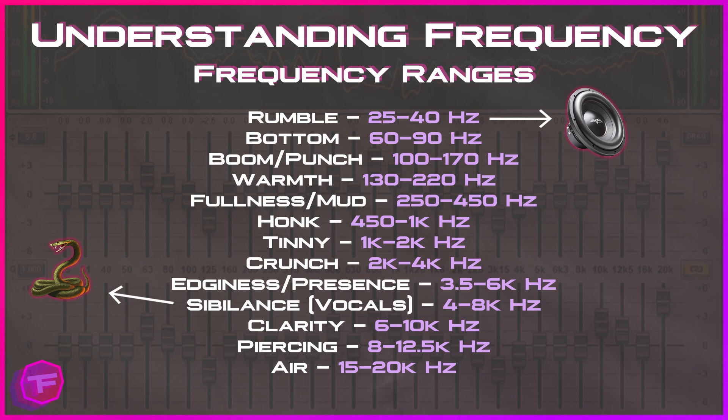Fullness and muddiness sounds come in around 250 to 450 Hz. Honky sounds come in around 450 to 1000 Hz. Tinny or metallic sounds are in the 1k to 2k Hz range. Crunch is around 2k to 4k. Edginess or presence in your voice is 3.5 to 6k. Sibilance — the S sounds — is anywhere from 4 to 8k, generally hitting right at 6 to 7k. Clarity sits in the 6 to 10k range, piercing sounds at 8 to 12.5k, and air from 15 to 20k.